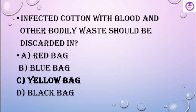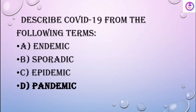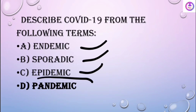Infected cotton with blood and other bodily waste should be discarded in the yellow bag, which goes for incineration later. Which of the following is a universal blood donor? O negative, which does not have a Rhesus factor, so O negative is a universal donor. COVID-19 is described as a pandemic — not endemic, not sporadic, and not epidemic.